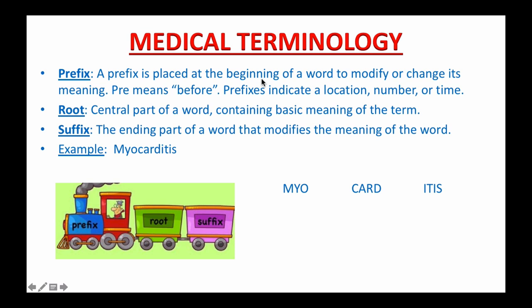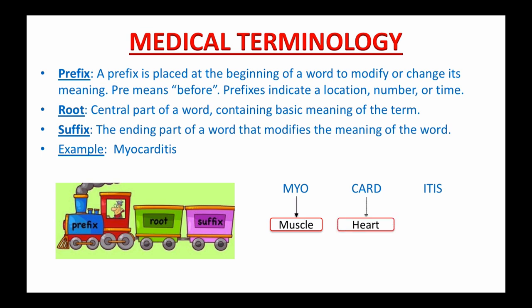A prefix is placed at the beginning of a word to modify or change its meaning. 'Pre' means before. A prefix indicates a location, number, or time. The root is the central part of a word containing the basic meaning of the term. And the suffix is the ending part of a word that modifies the meaning of the word. For example, 'myocarditis' — we can break it into three parts: the prefix 'myo' means muscle, the root 'card' means heart, and the suffix 'itis' means inflammation. So the meaning of myocarditis is the inflammation of the heart muscle.